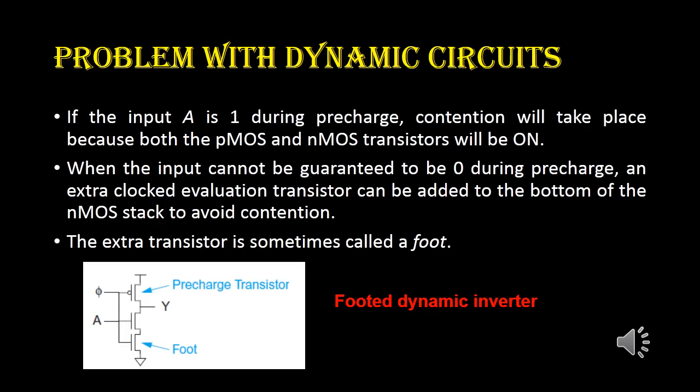A problem occurs in dynamic circuits when the clock signal equals 0: the PMOS transistor is in the on state, and if the input is also 1, the NMOS transistor is also on. Both PMOS and NMOS are on simultaneously — this is called contention. To avoid this, an extra NMOS transistor called a foot is added at the bottom, forming what is called a footed dynamic inverter.